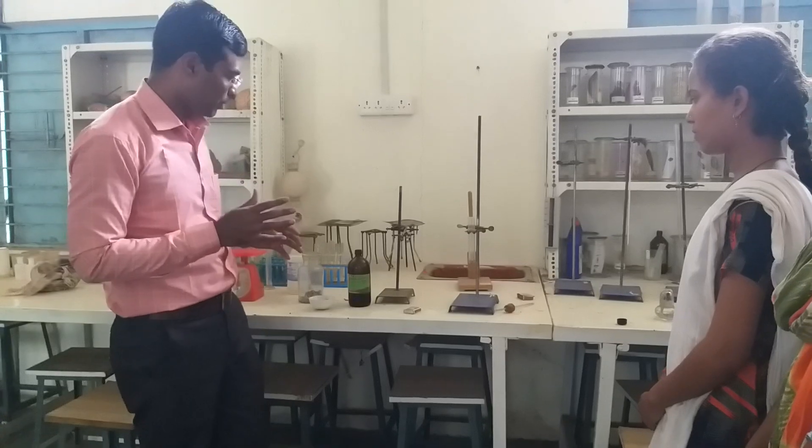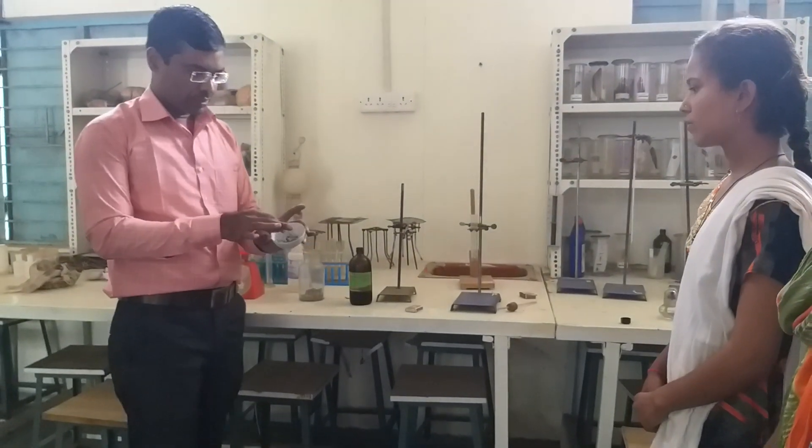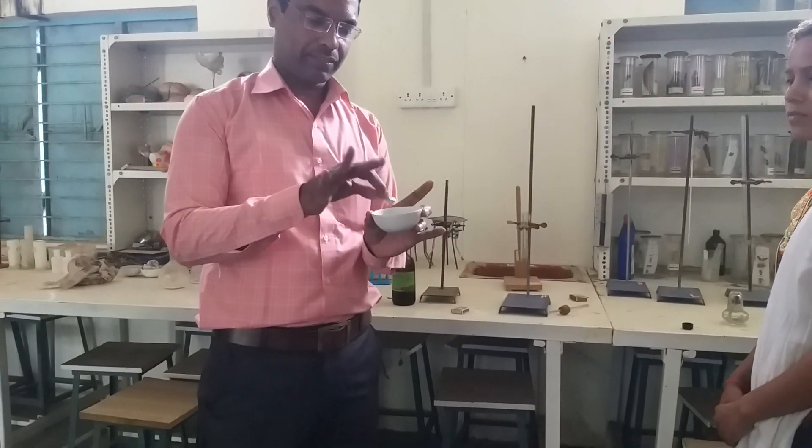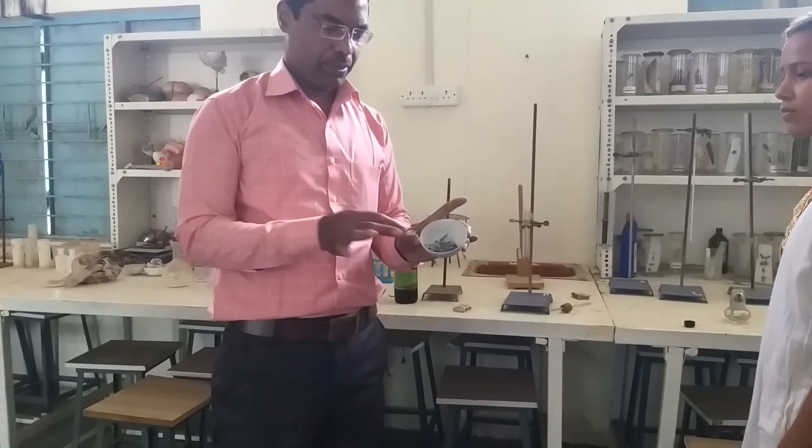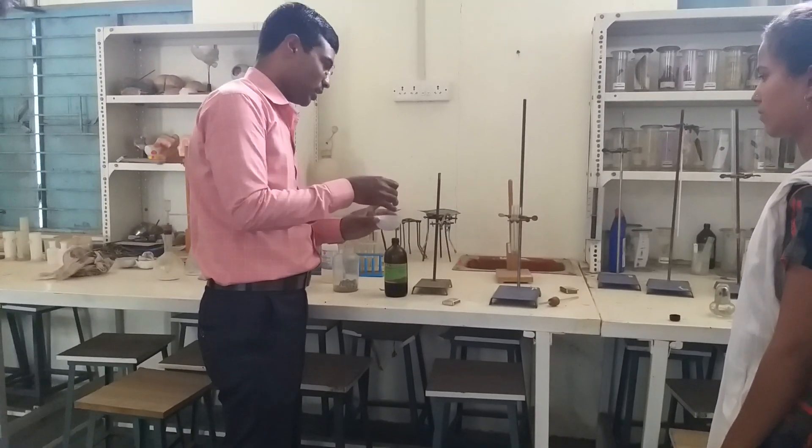Take the example of the reaction of zinc. So we have zinc. Look up, zinc is a silvery white metal. And we have to add some pieces of zinc in the test tube.